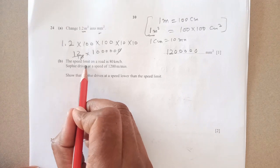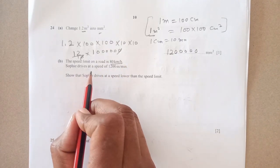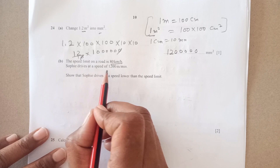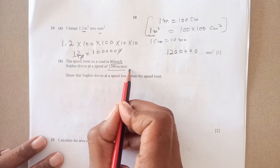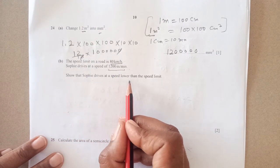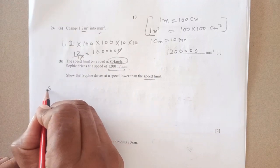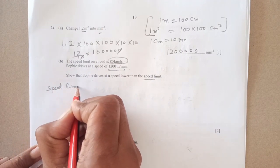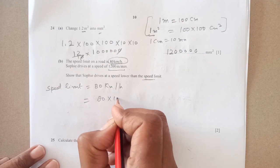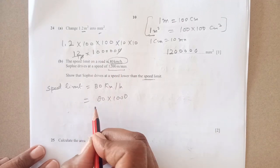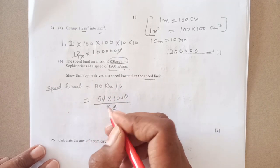Part b: the speed limit on road is 80 kilometers per hour. Sofi drives at speed of 1200 meters per minute. Show that Sofi drives at speed lower than the speed limit. Speed limit is 80 kilometers per hour. We convert to meters per minute: 80 kilometers times 1000 to make meters, divided by 60 to convert hours to minutes.